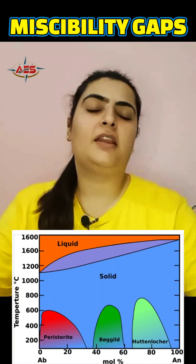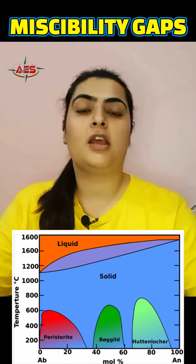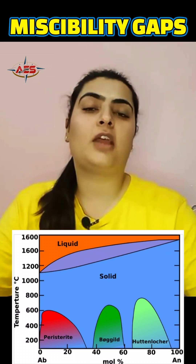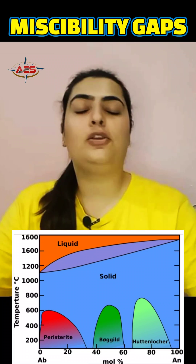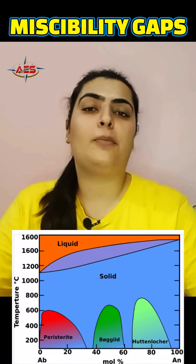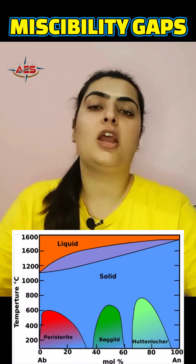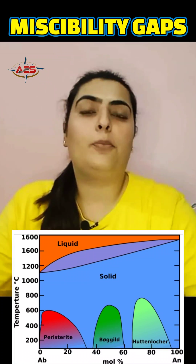The peristerite gap refers to the exsolution that is seen in oligoclase. Here we get compositions from anorthite 0 to anorthite 25. Due to the exsolution lamellae produced in the peristerite region, we see iridescence in the gemstone moonstone.